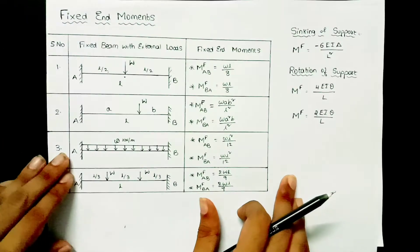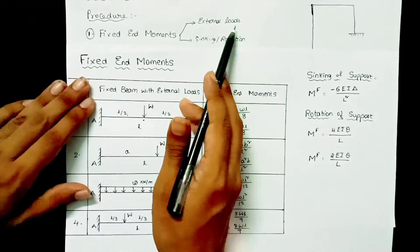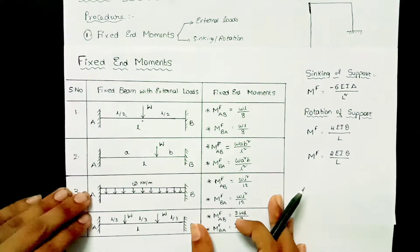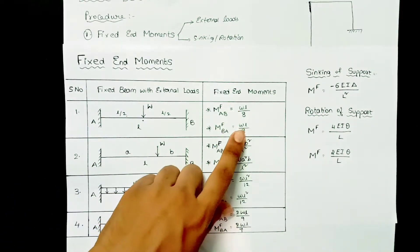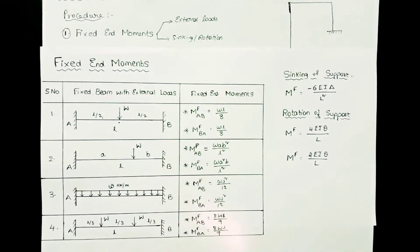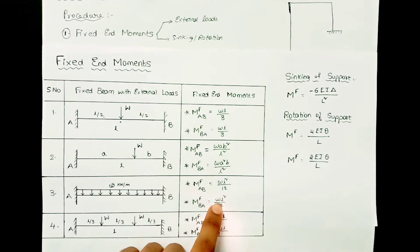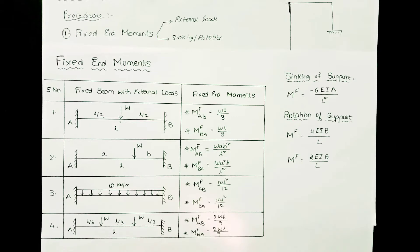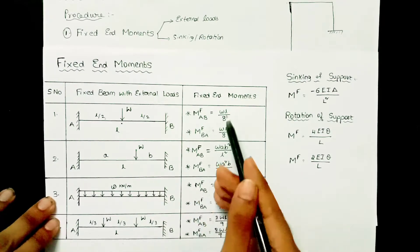The fixed end moments may be due to external loads. If the beam has a central point load, use wL/8. If the beam has an eccentric point load, use wab²/L² or wa²b/L² for the other end. If a fixed beam has UDL over the entire span, use MF_AB = wL²/12. For two equal point loads equidistant from each other, use 2wL/9.